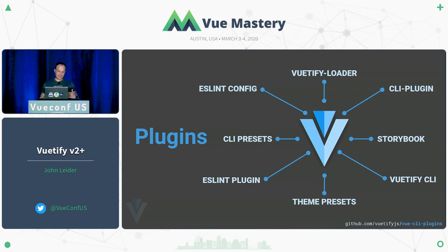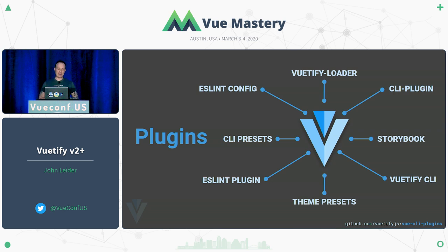Our ESLint plugin will automatically upgrade your application from 1.5 to 2.0 for the grid system — you don't even have to do anything. We work with the Vue ESLint config plugin to make it a little better and package that within some of our bundles for projects. The Vuetify loader has automatic tree shaking for styles and components built in out of the box. Whenever you install Vuetify with Vue CLI and compile your application, it gets rid of everything you're not using without any configuration.